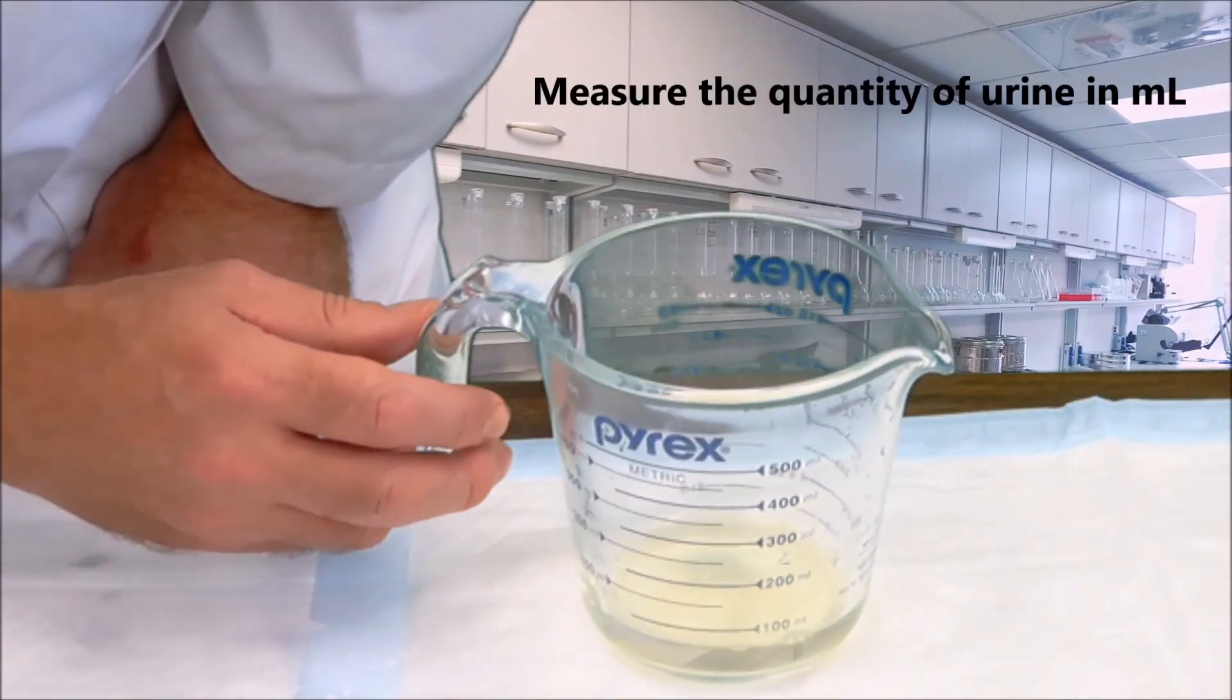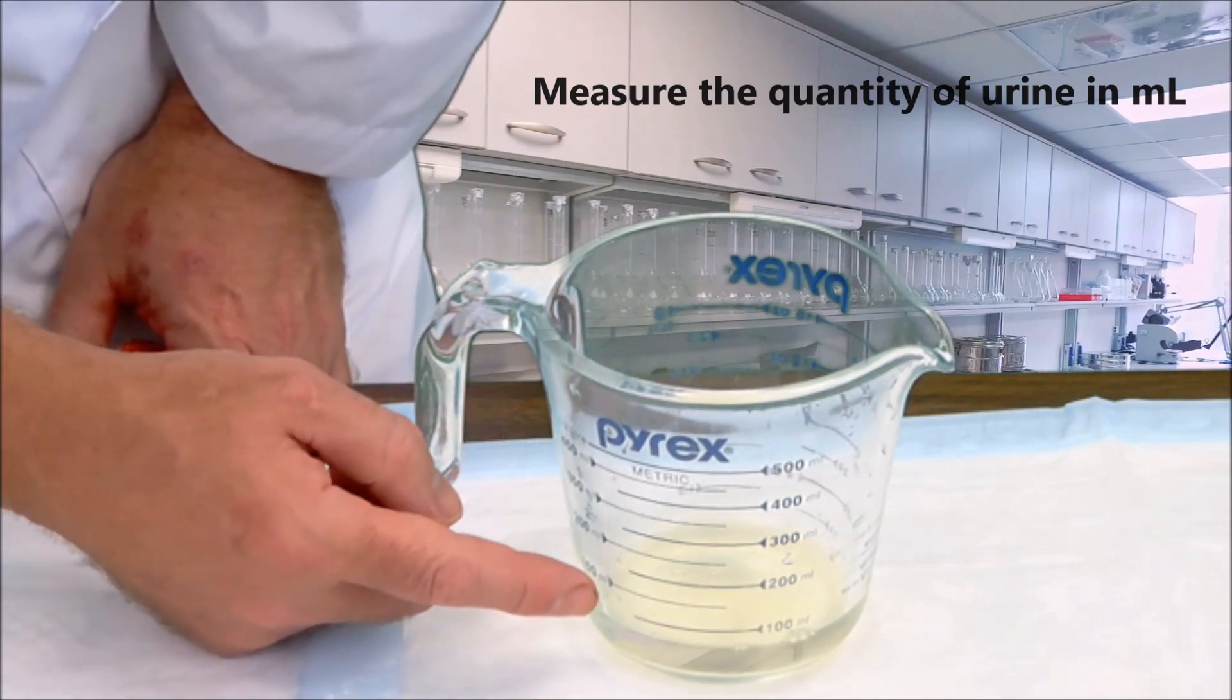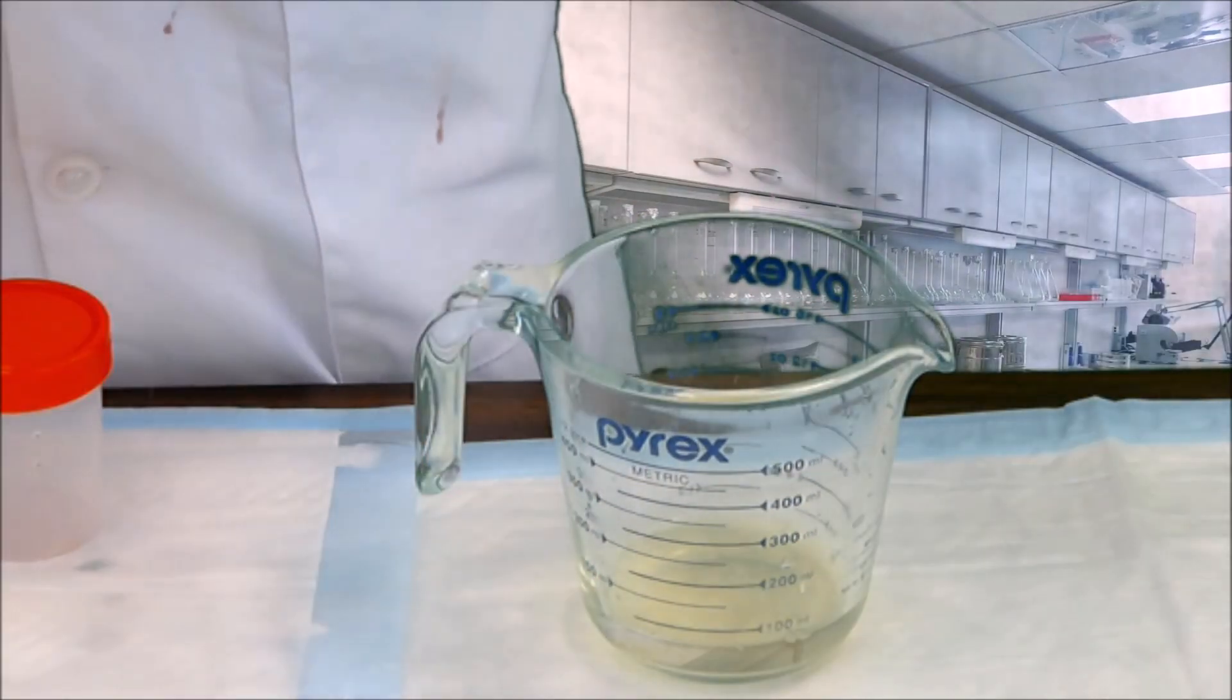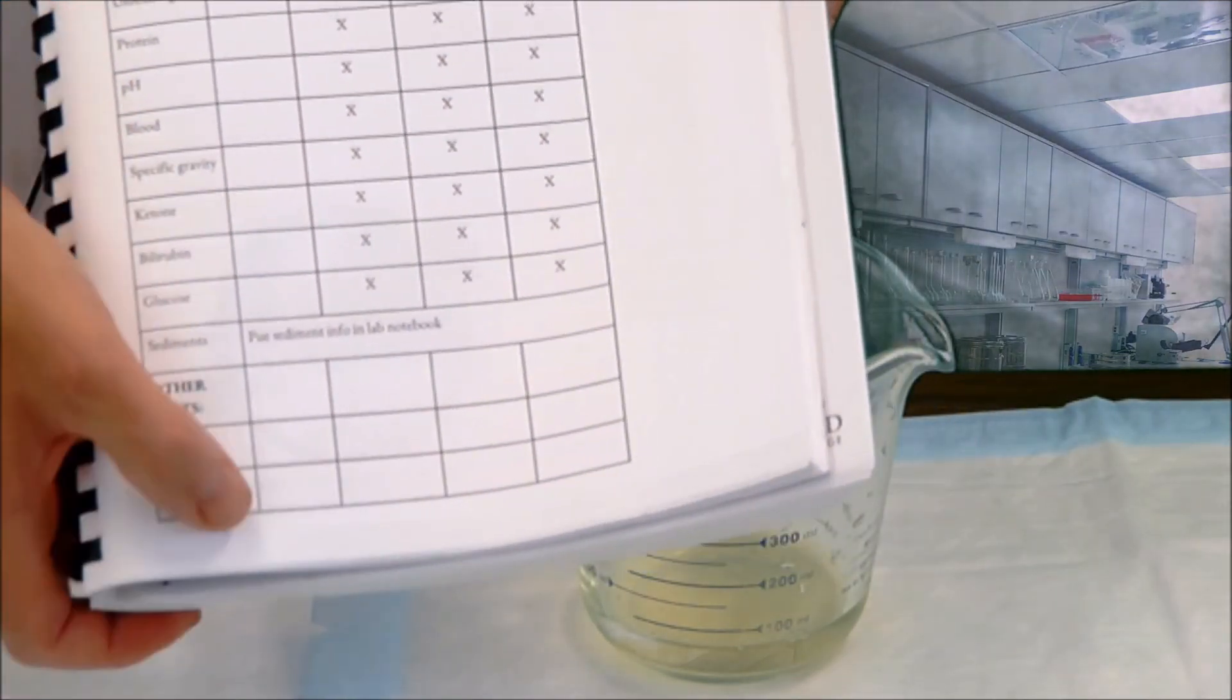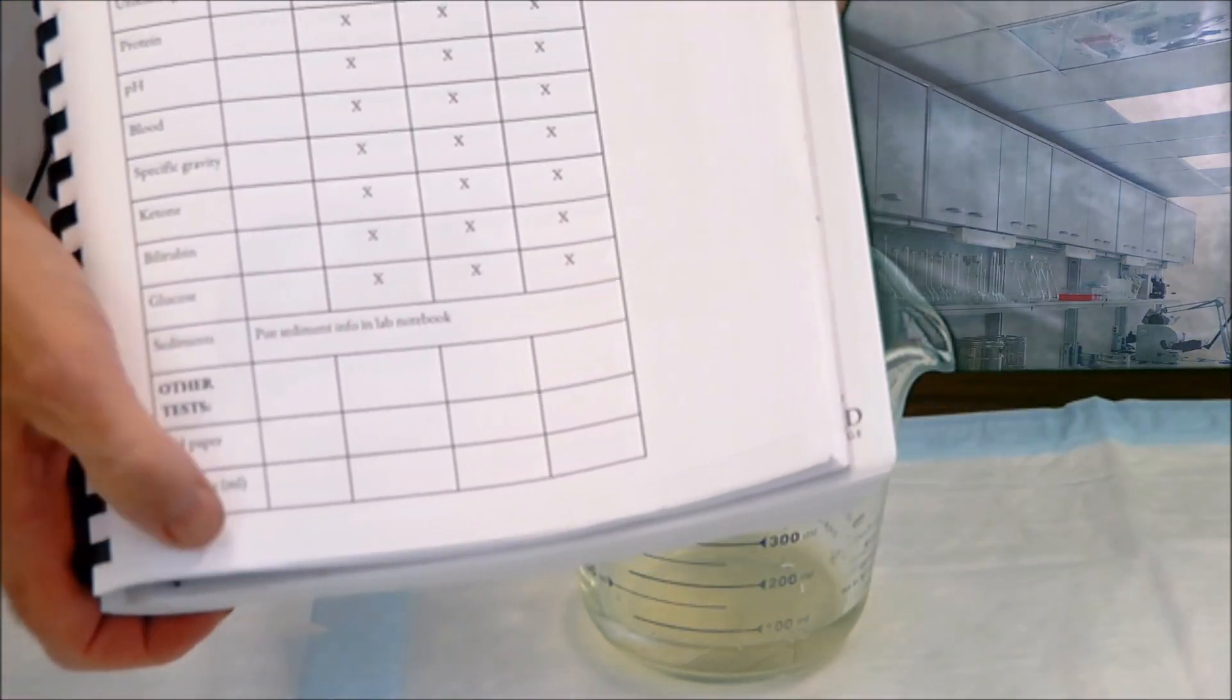So I can see it doesn't quite go up to the 100 mil line, so I'm going to guess it's about 70 or 80 mils. And I'm going to write that in my lab manual down here at time zero, the volume of urine that was urinated.